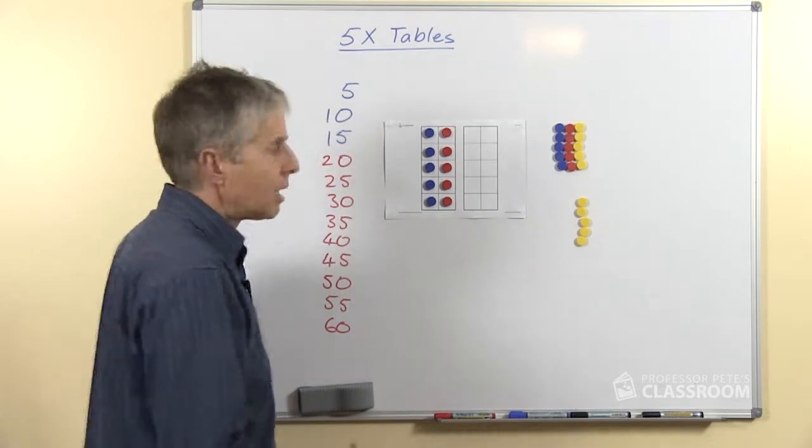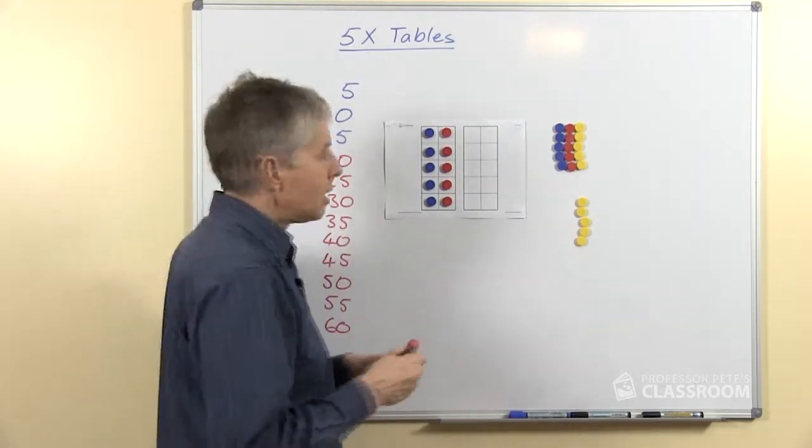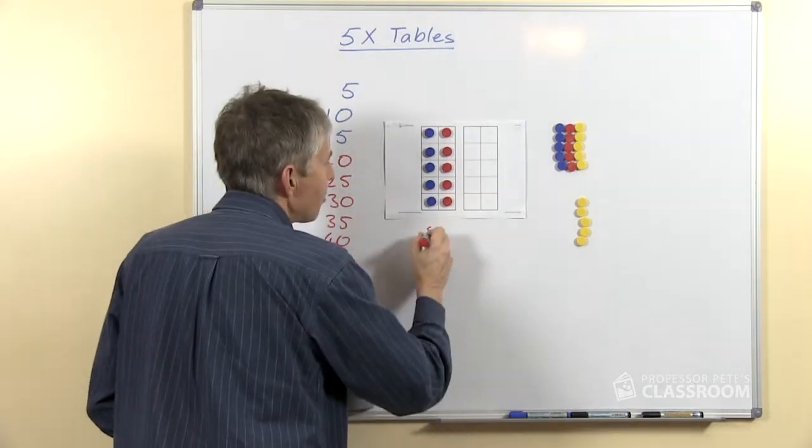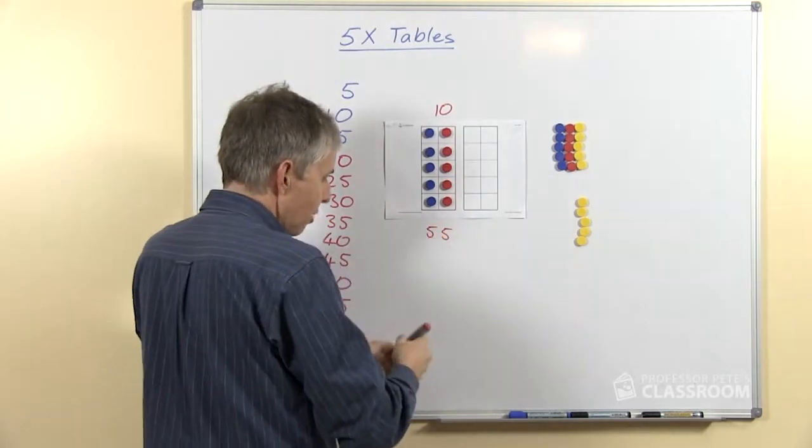Here's some 10 frames and I've started putting some counters out and this will show us the same thing in another way. So here we have 5 and 5 and of course 5 and 5 makes 10, pairs of 5 makes 10.